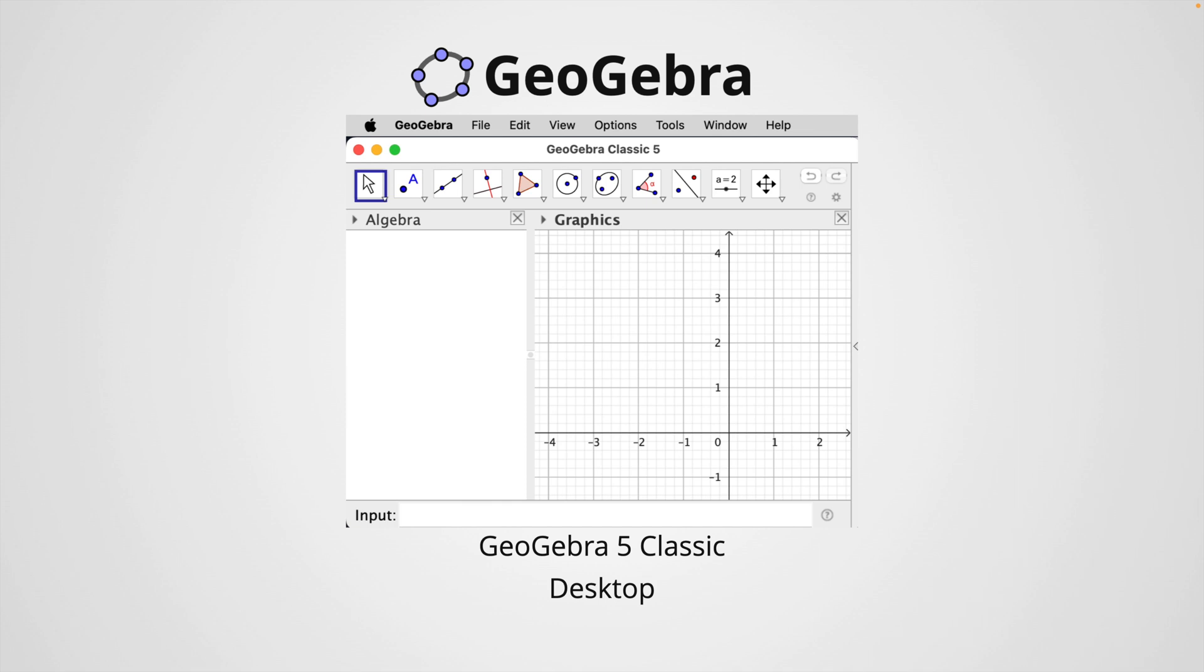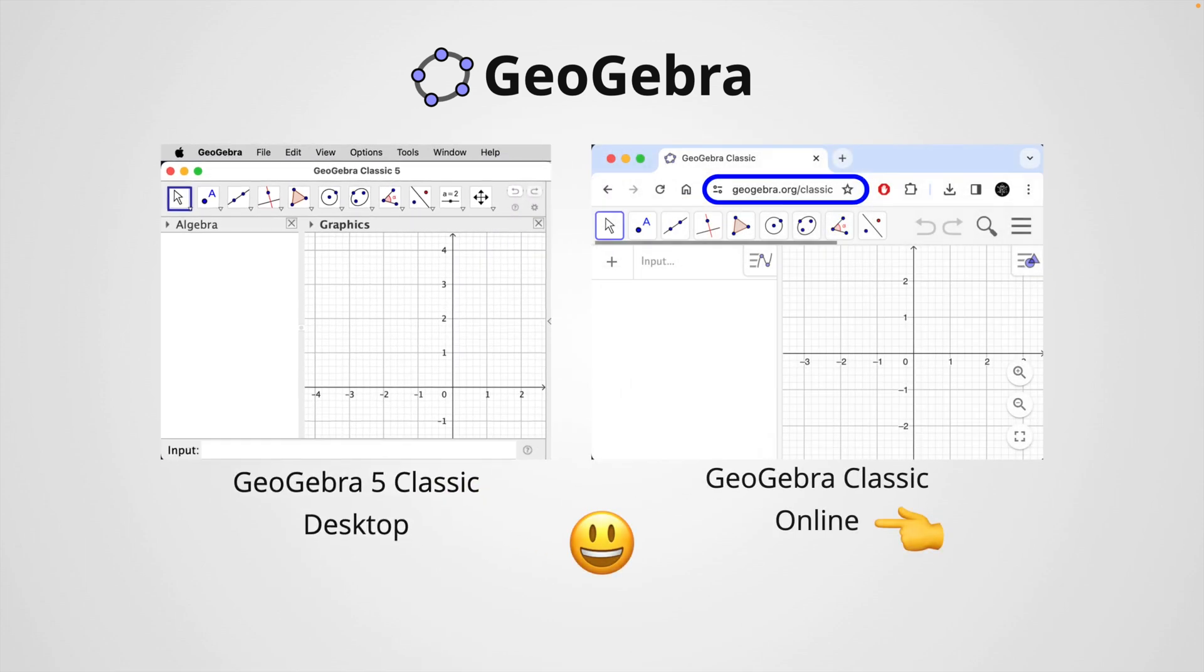Now let me show you how to do this in GeoGebra. We're going to work with GeoGebra Classic 5 for desktop, but you can also use the GeoGebra Classic 6 online. The method that I'm going to show you here works for both versions of GeoGebra, since I will be using the GeoGebra scripting commands. If you have never used GeoGebra before, don't worry, you still can follow this tutorial to create fractal trees and have some fun.